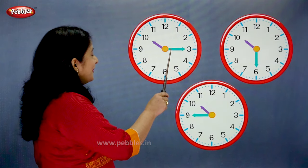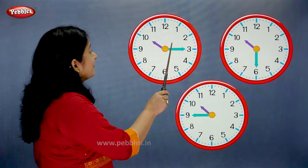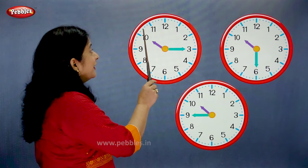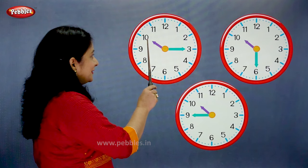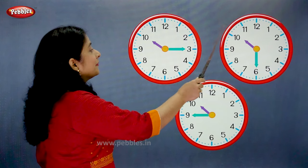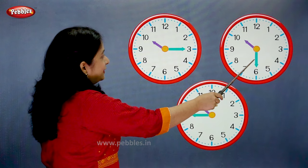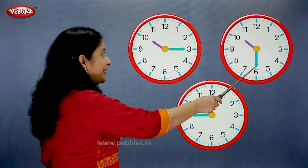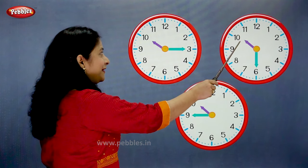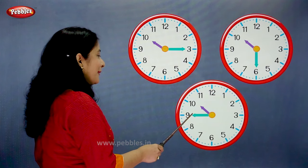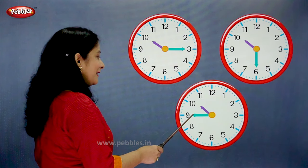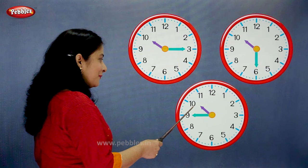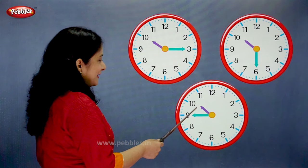When the minute hand is on 3, we say quarter past the current hour. When the minute hand is on 6, we say half past the current hour. When the minute hand is on 9, we say quarter to the next hour.